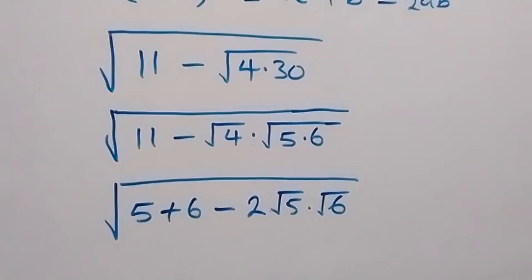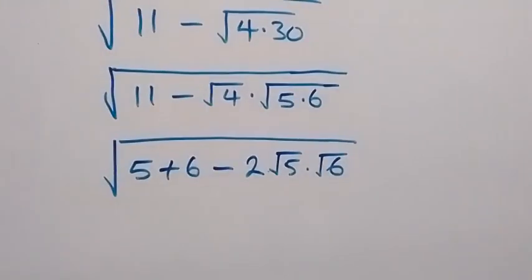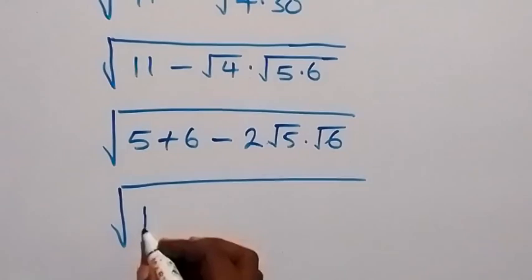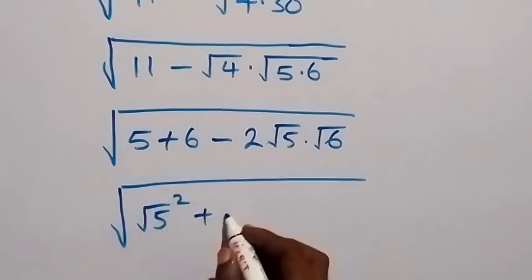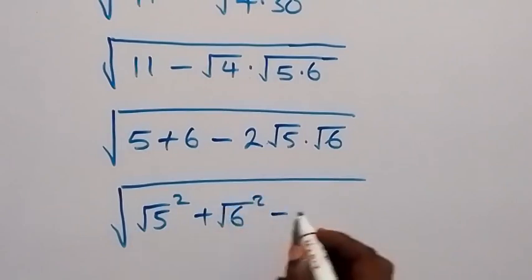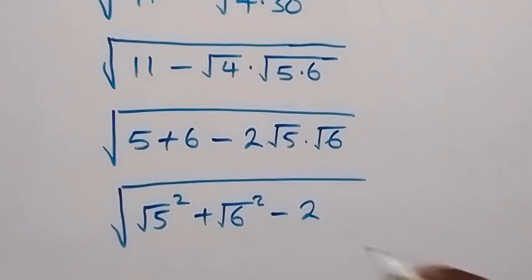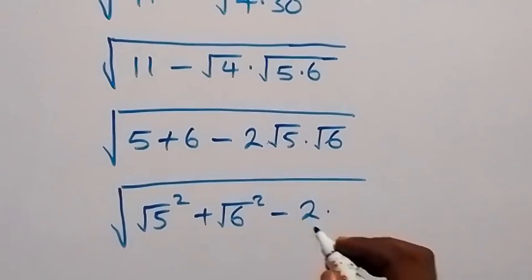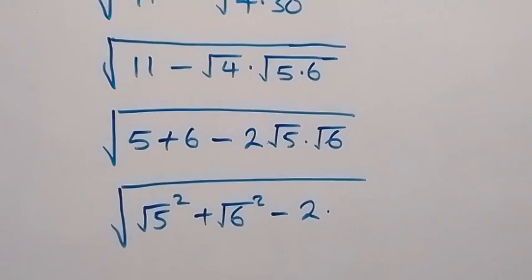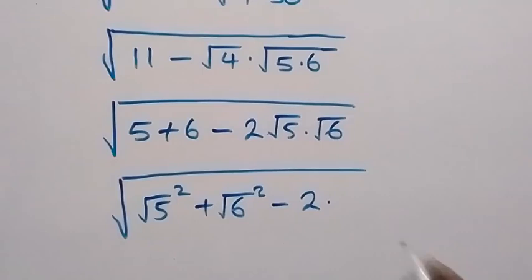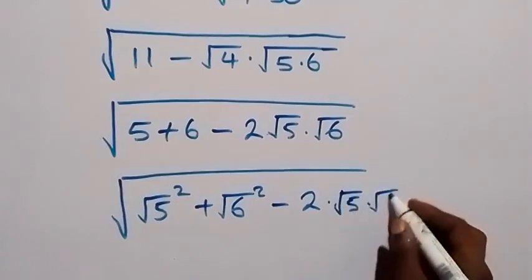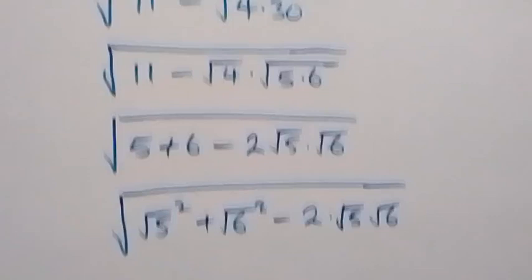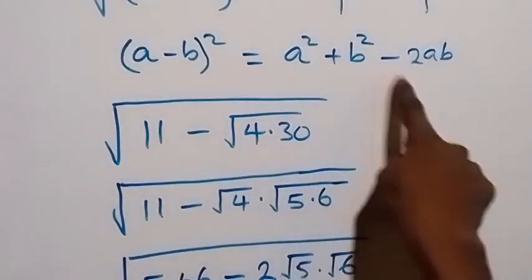From here, we can rewrite this and say this will be square root of (√5) squared plus (√6) squared minus 2 times √5 times √6. Here √5 is serving as a and √6 is serving as b, which is in the format a squared plus b squared minus 2ab.